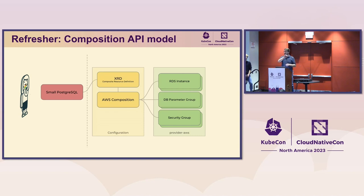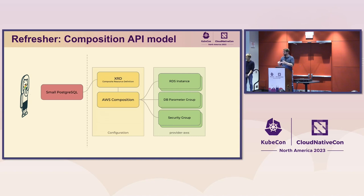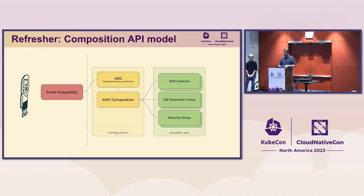That small Postgres instance the developer needs — something very simple — means underneath the covers the platform engineer has made a composition for AWS: an RDS database, database parameter group, security group, all that sort of stuff. It could be AWS, GCP, Azure, whatever — but the developer is faced with a simple abstraction of Postgres, and all the golden paths, configuration, and organizational policy are under the covers, beneath the API line.